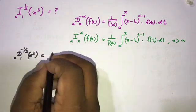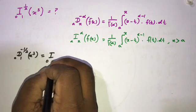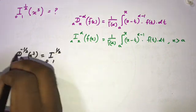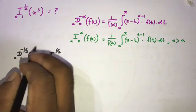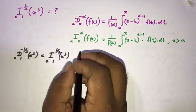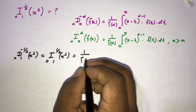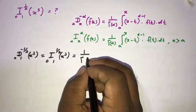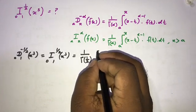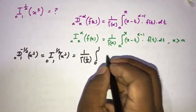Or using the I notation, we write I from 0 to 1 superscript one-half of x to the third power. This equals 1 over gamma of alpha, where alpha equals one-half. So we have 1 over gamma of one-half, with the integral from 0 to 1.